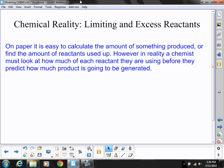The difference is when we start talking about limiting and excess reactants, we're going to be working with problems in which we have multiple values with which we can start. So chemical reality. On paper, it is easy to calculate the amount of something produced or find the amount of reactants used up. However, in reality, a chemist must look at how much of each reactant they are using before they predict how much product is going to be generated.